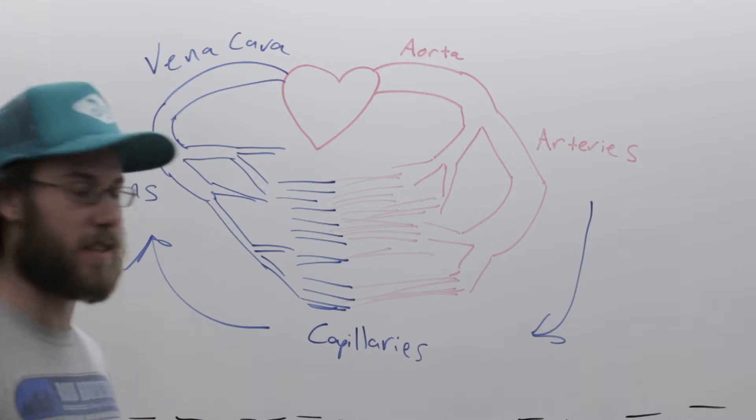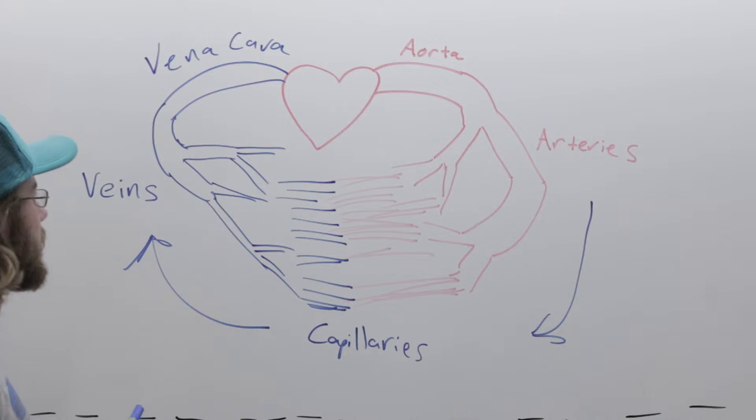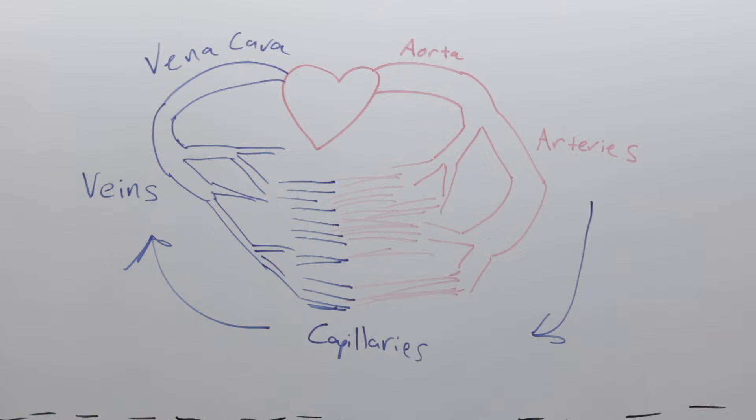So Murray was considering maximum efficiency in the circulatory system, and so he came up with two ideas of how energy is used by the circulatory system. The two energy costs that Murray theorized were friction of the fluid flowing through the veins and arteries, as well as the energy cost of maintaining the total volume of blood.